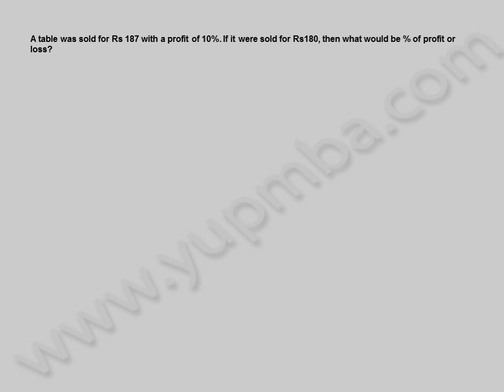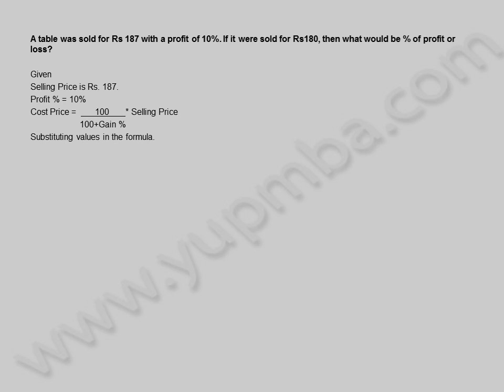A table was sold for 187 rupees with a profit of 10%. If it was sold for 180 rupees, then what would be the percentage of profit or loss? Given selling price is 187 rupees and profit percentage is 10%, cost price is equal to 100 divided by (100 plus gain percentage) into selling price. Substituting values: cost price equals 100 divided by (100 plus 10) into 187, which equals 18700 by 110.